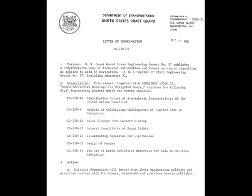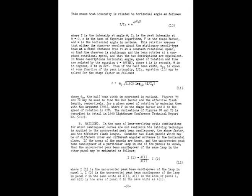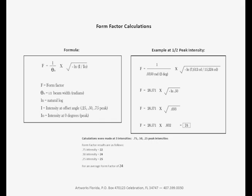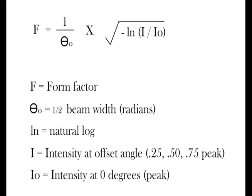Coast Guard Document CG 250-37 Section 5-4, Calculations of Blondel Ray Factors and Effective Beam Candle Powers. This formula is used to calculate the form factor. Calculations are as follows: F being the form factor, Theta O is the half beam width. The half beam width is determined by rotating the lens until the peak intensity drops to one half.